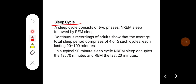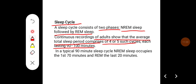A sleep cycle consists of two phases: NREM sleep followed by REM sleep. Continuous recording of adults shows that the average total sleep period comprises 4 to 5 such cycles, each lasting 90 to 100 minutes. In a typical 90-minute sleep cycle, NREM sleep occupies the first 70 minutes and REM lasts 20 minutes.